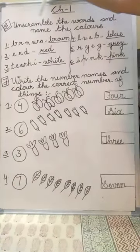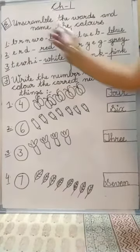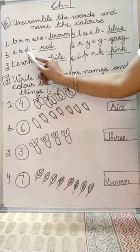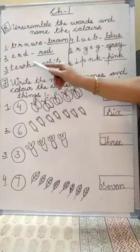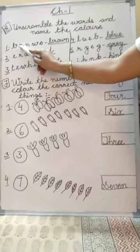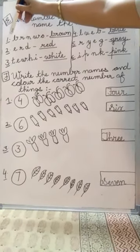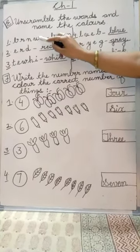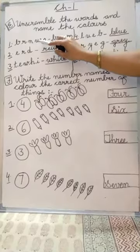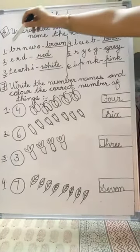Question E. Unscramble the words and name the color. So let us start with the first one. What is written? B, R, N, W, O. So we have to arrange it. It will be a spelling of the color. This is the spelling of brown. B, R, O, W, N. We have to arrange it and write the correct spelling: brown.